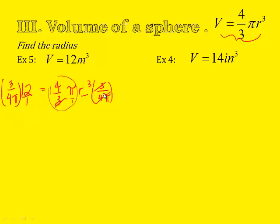Over here, this will cancel, and I'm left on the right side with r cubed. Over here, I'm going to plug this in my calculator. If you multiply it, you get 36 over 4π, which is 9 divided by π. So when I plug all that in, I'm going to get 2.86 in my calculator.